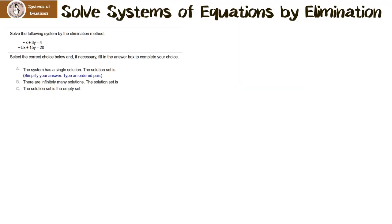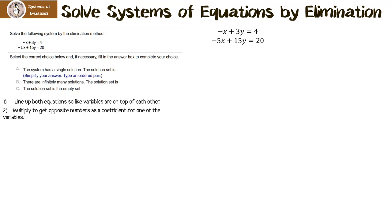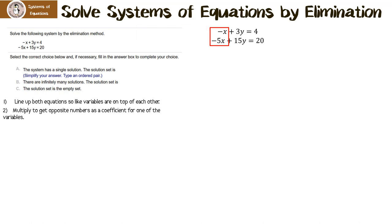Solve the following system by the elimination method. The first thing we have to do is make sure variables are on top of each other — and we're lucky because we have x's over x's and y's over y's. Next, we need to multiply so we have coefficients that are opposites. I notice a negative x and a negative 5x. If I multiply the first equation by negative 5, that gives me positive 5x minus 5x, which is 0x. So I'm going to multiply the first equation by negative 5.